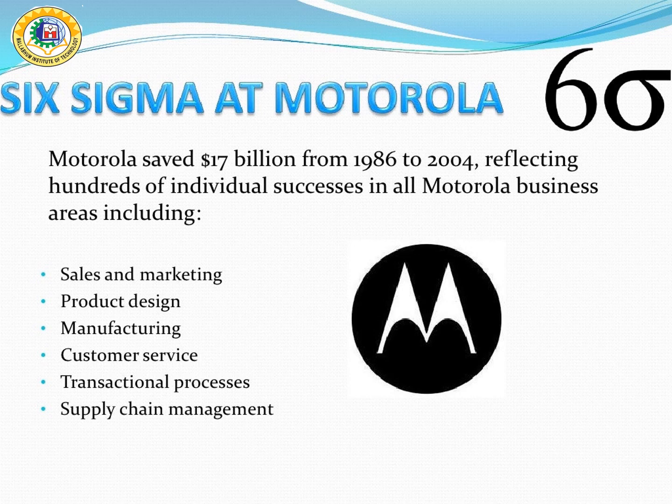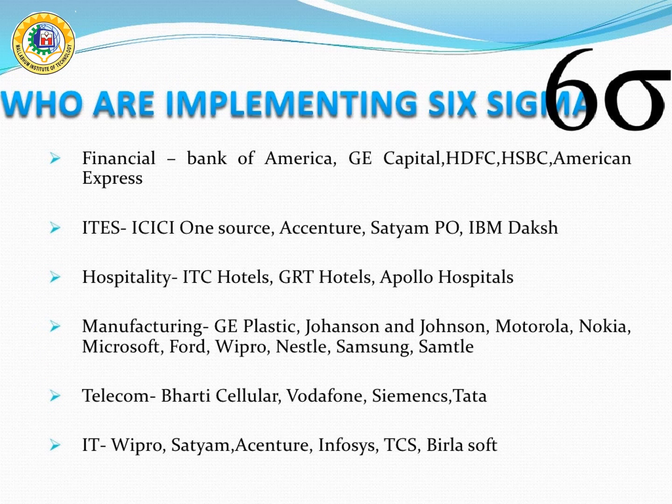In January 2011, Motorola chose to make a back-to-basics approach and focus on the essence of Six Sigma — the methodology used to delight its customers by exceeding their expectations and delivering products and services of the highest quality. This is a list of companies claimed to have successfully implemented Six Sigma in their organizations.